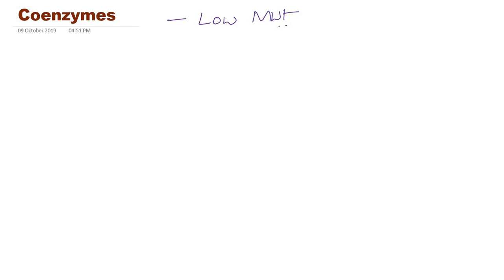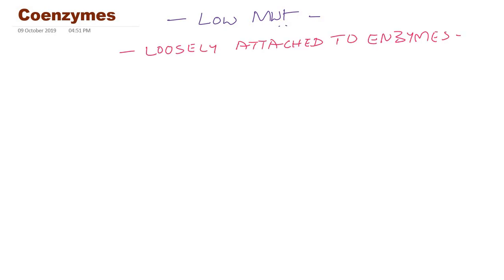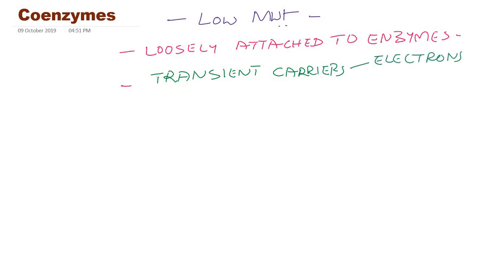Coenzymes are low molecular weight organic compounds. They are loosely attached to the enzyme and can be separated easily by dialysis. These coenzymes are transiently involved in enzyme-catalyzed reactions — they are transient or temporary carriers of either electrons or functional groups, carrying them from the substrate.